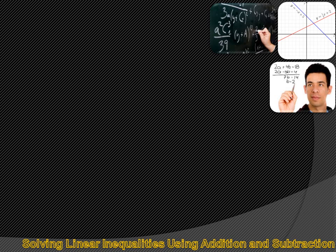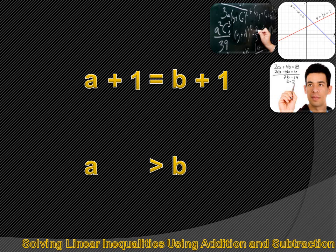We use the concept of equivalent expressions or equivalent equalities to solve algebraic equations, and we're going to use the same concept to solve inequalities. Here's how it works: if we know that A equals B, then we know that A plus 1 equals B plus 1. Similarly, if we know that A is greater than B, then we also know that A plus 1 is greater than B plus 1.